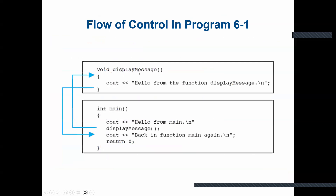Here is the flow of control for the previous program. First, the compiler sees the displayMessage function definition and makes note of it, but execution always starts in the main function. So the first output is 'hello from main.' Then displayMessage is called and executes, printing 'hello from the function displayMessage.' Then control returns to main, which prints 'back in function main again.'